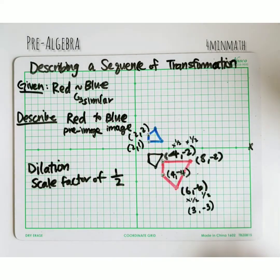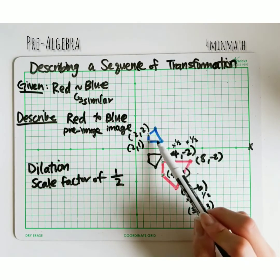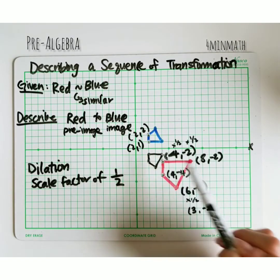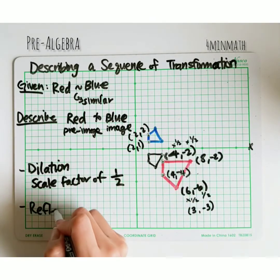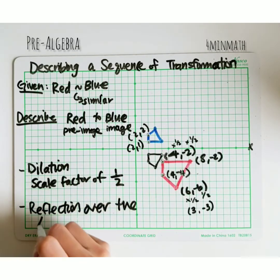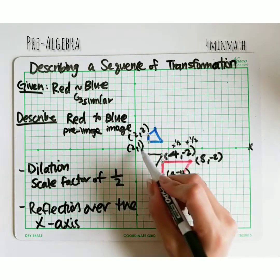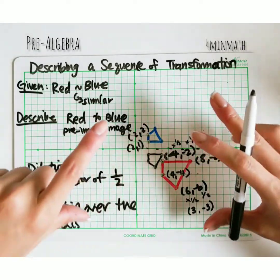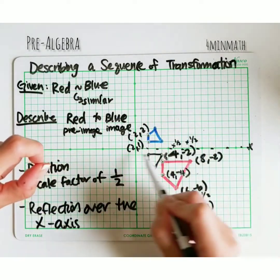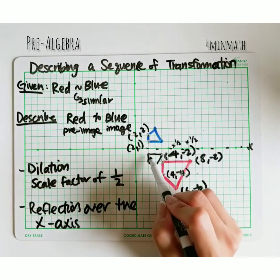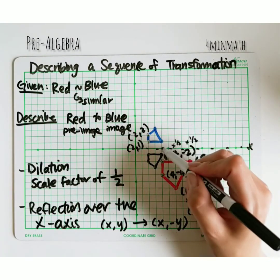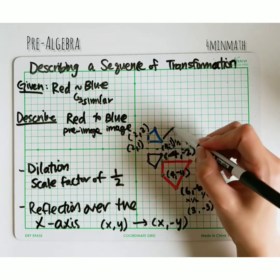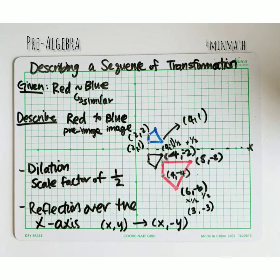The reduced shape is now much closer to the blue figure. Going from red to blue, the second transformation is a reflection over the x-axis. If you were to trace the reduced shape and fold it horizontally along the x-axis, the two figures would meet. The rule for a reflection over the x-axis is that the coordinate (x, y) becomes (x, -y) — the y gets negated. For example, this point (4, -1) and the blue point (4, 1) are opposites, which confirms the reflection.